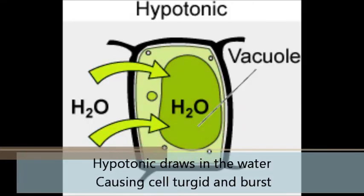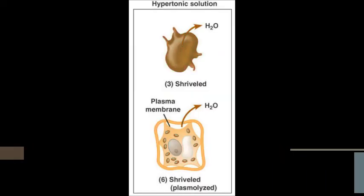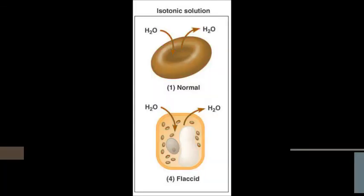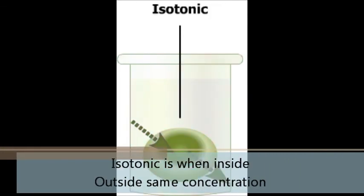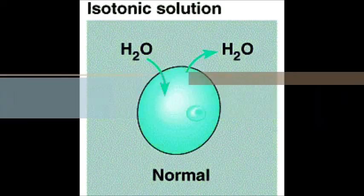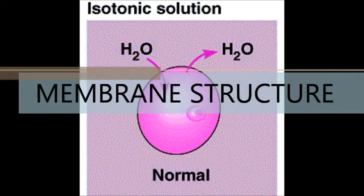Hypotonic brings in water, causing cells to swell and burst. Hypertonic drops out water, causing plasmolysis and crenation. Isotonic is when outside of cell has same concentration. There's no water moving across the membrane structure.